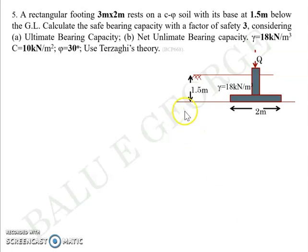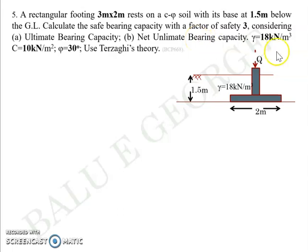The base is at 1.5m below the ground level. You are asked to calculate the safe bearing capacity with a factor of safety of 3, considering case A: ultimate bearing capacity, and case B: net ultimate bearing capacity. Unit weight gamma is 18, C is given as 10 kPa, phi is given as 30 degrees, and you should use the Terzaghi theory.